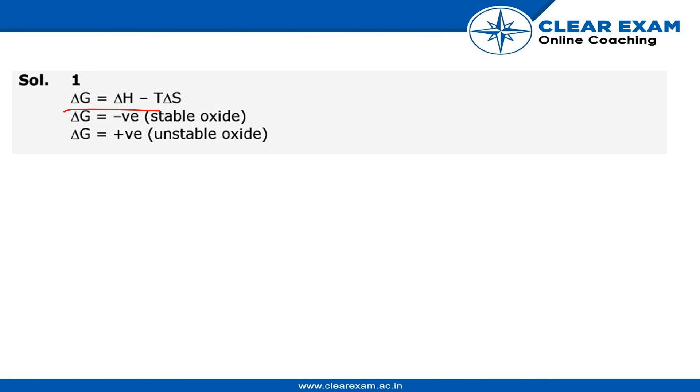To recap: ΔG = ΔH - TΔS. ΔG is negative for stable oxides and ΔG is positive for unstable oxides.